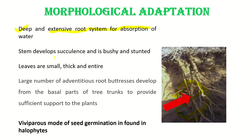The stem develops succulence — it becomes succulent so it can store moisture. It is also bushy and stunted; not as huge as evergreen trees, but bushy with enhanced lateral growth and short in height. Coming to leaves, the leaves are small, thick, and entire. Small and entire leaves help in minimizing the surface area, and if the surface area is less, loss of water will also be less.